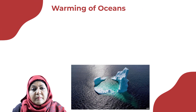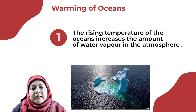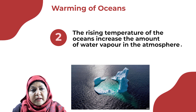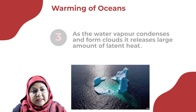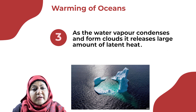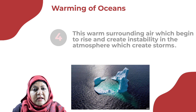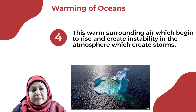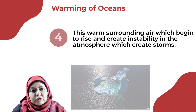First, let us discuss the warming of oceans. The warming of the earth leads to the warming of oceans. The rising temperature of the ocean increases the amount of water vapor in the atmosphere. When this water vapor condenses, it releases latent heat, warming the surrounding air, which begins to rise and creates instability in the atmosphere, forming storms.